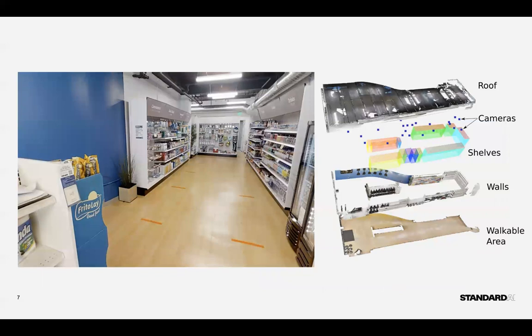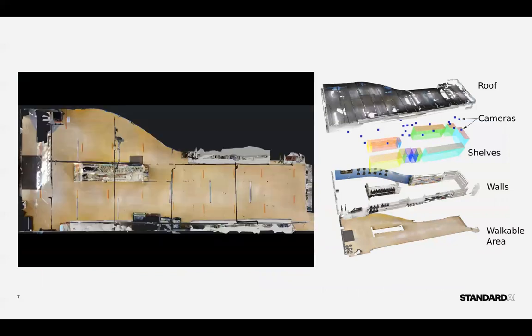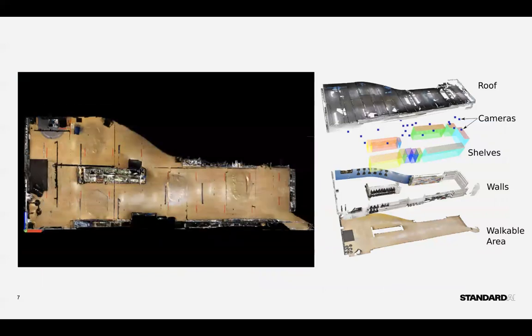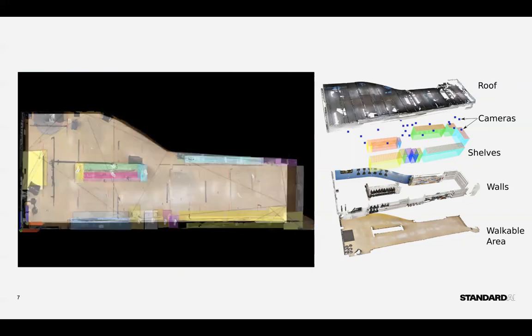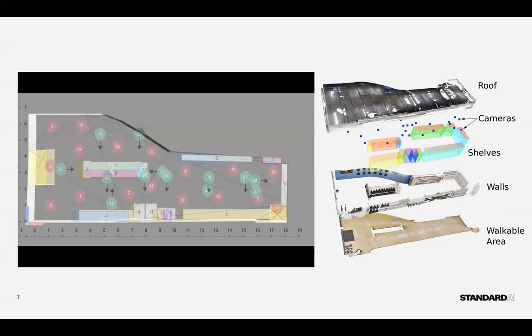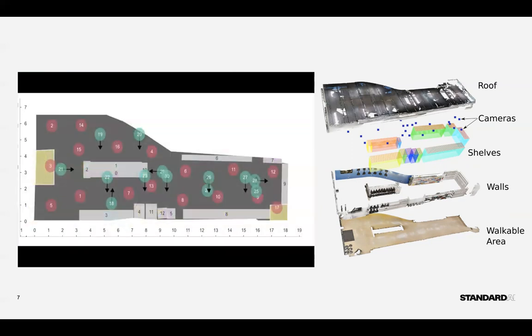Finally, here is a quick example of how our camera placement system ingests the point cloud of an environment, builds a 3D model with shelves, floor and walls, and further utilizes the proposed optimization framework to come up with the optimal camera placement.